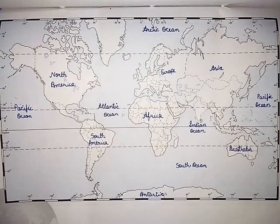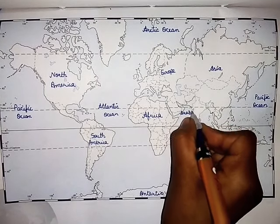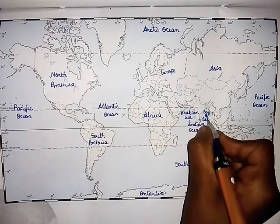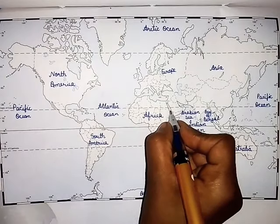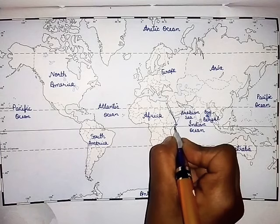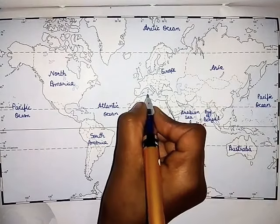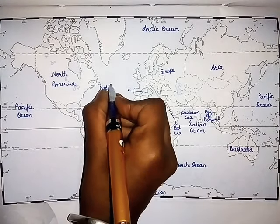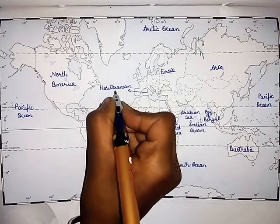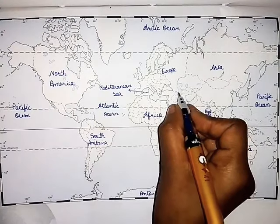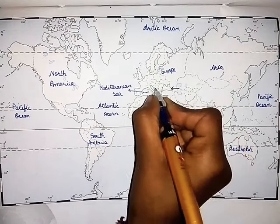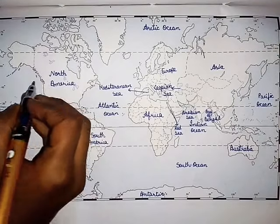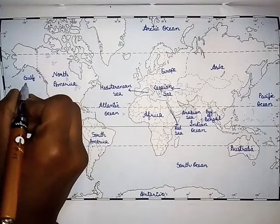Now we will fill the seas. Here is the Arabian Sea. Here is the Bay of Bengal. This is the Red Sea. This one here between Europe and Africa is the Mediterranean Sea. This is our Caspian Sea. And here beside North America is the Gulf of Alaska.